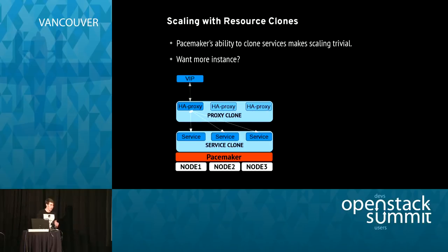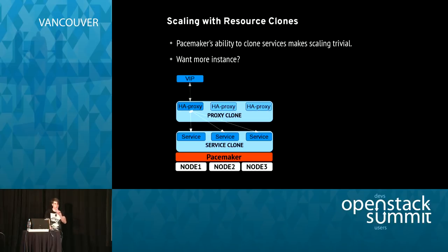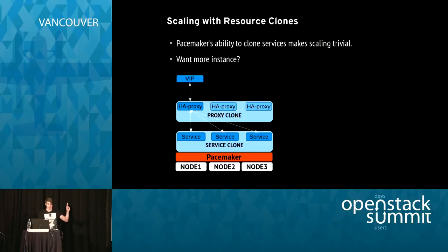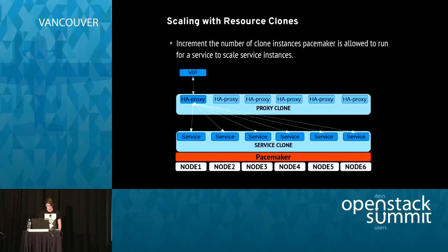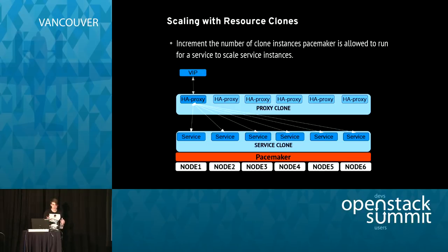One important thing for scaling is Pacemaker's clone resource type. All these services use clones. With Pacemaker, you define a resource once in the config and specify how many replicas you want. With HAProxy, we want redundant instances spread across all nodes — so we declare it once and say replicate across all nodes. Same with our services. If we want more capacity, we add more nodes and Pacemaker dynamically grows the configuration. When it grows, the ordering and colocation constraints still apply — so behavior stays consistent.